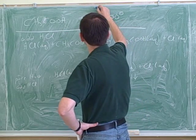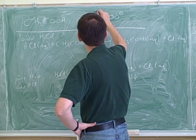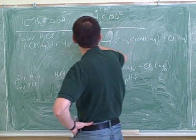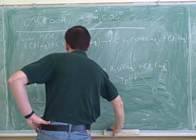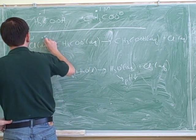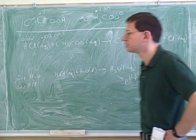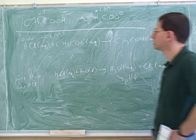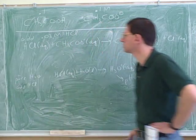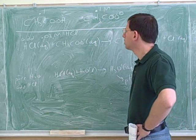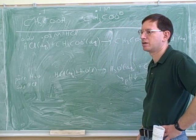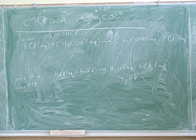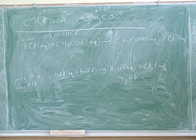Let's say we started with 0.1 molar acetic acid and 0.1 molar acetate, and we add 0.03 molar hydrochloric acid. So after we add the hydrochloric acid, how much acetate is there going to be? 0.07. And how much acetic acid? 0.13.